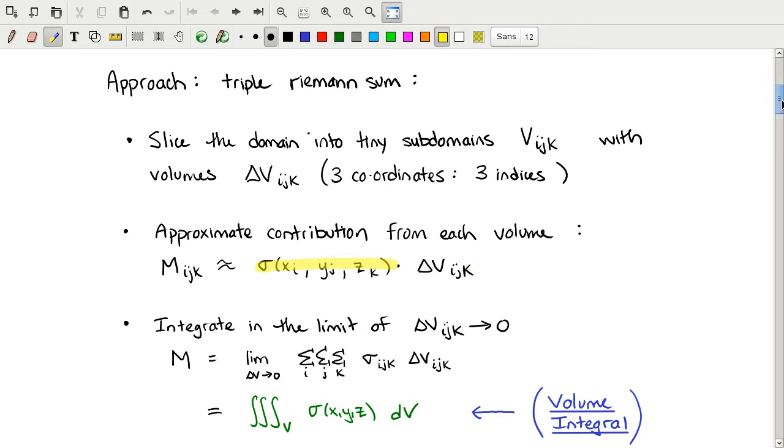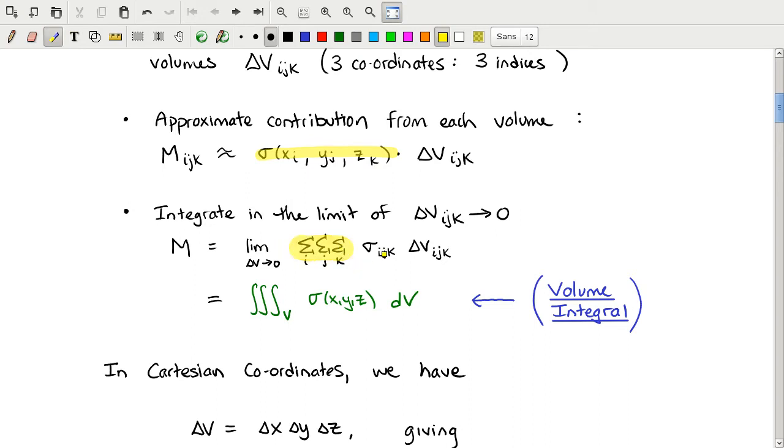We add up all of these small contributions to volume—all of the small volumes times density—add them up over all the indices, and take the limit as the small volumes go to zero size to get the fully accurate answer. That result is what we call the triple integral, because there are three sums over three indices. We get a triple integral of the density function sigma. In the limit, the delta v is replaced with dv. This notation is called a volume integral notation.